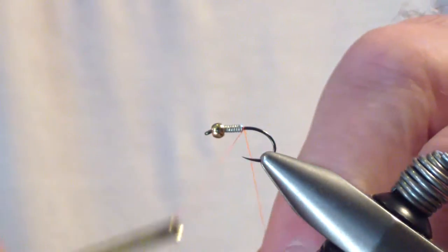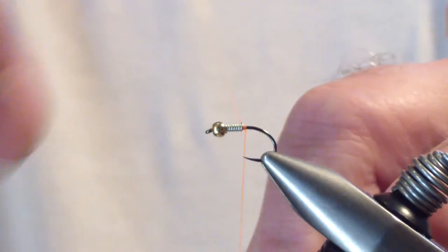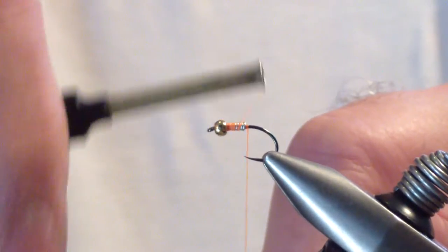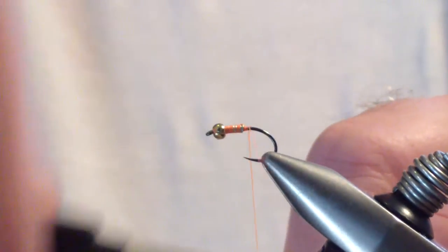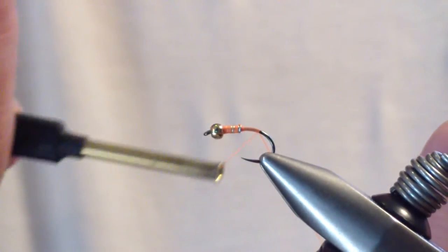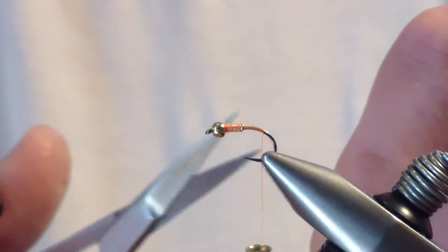And then we're going to start our thread. Start behind our wire. Secure it. Wrap forward. And then bring your thread back to the point where you just begin to enter that bend.